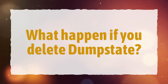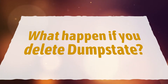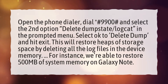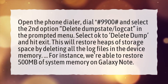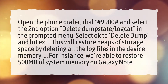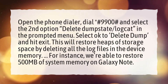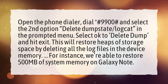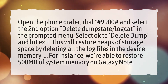What happens if you delete dump state? Open the phone dialer, dial asterisk hash 9900 hash, and select the second option — delete dump state, log cat — in the prompted menu. Select OK to delete dump and hit exit.